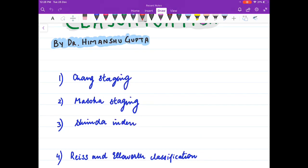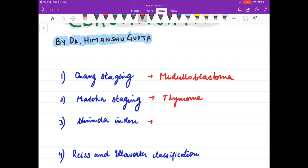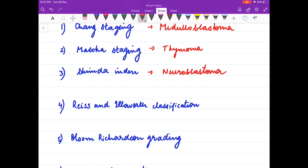Chang staging is used for medulloblastoma. Mesoka staging is used for thymoma. Shimda index is used for neuroblastoma. Reese and Ellsworth classification is used for retinoblastoma.